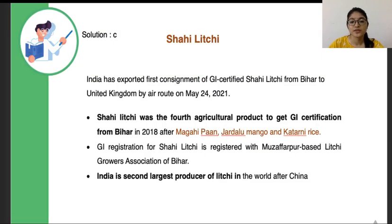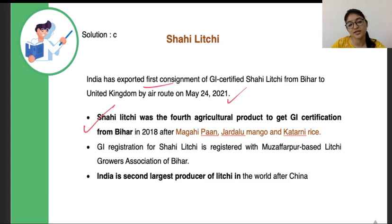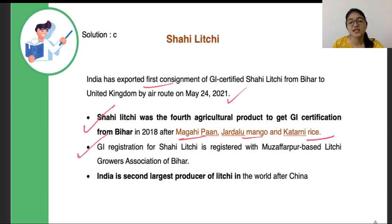The first consignment of Shahi Lichi was exported on May 24, 2021 from Bihar. The other products that have received the GI tag are Magahi paan, Jardalu mango, and Katerni rice. The GI registration is registered with the Muzaffarpur-based Lichi Growers Association of Bihar.